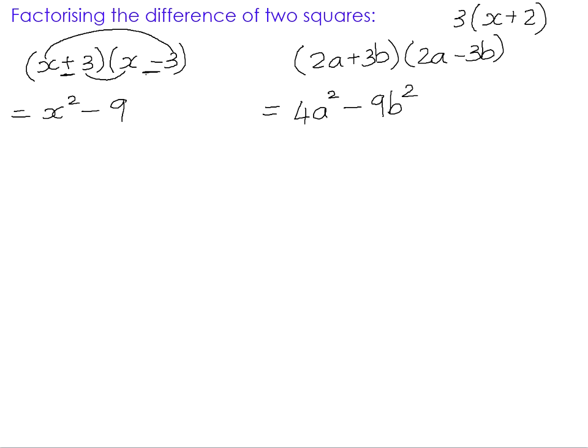Let's look at the features of the product of sum and difference brackets. x squared is what we would define as a perfect square, because it can be square rooted — the square root of x squared is just x. But 9 is also a perfect square, because it's 3 times 3. In a sum and difference bracket, because the brackets are identical, when you multiply the firsts you're multiplying something by itself. So your answer should always be a perfect square — that is the definition of a perfect square: it has two factors that are exactly the same. And the sign in between them is a minus, because whenever you multiply a positive and a negative, your result is always going to be negative.